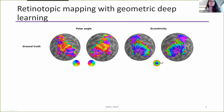Here we have the polar angle maps and the eccentricity maps for one participant in the dataset. For illustration purposes, we represented these maps on spherical surfaces because it would be easier to see the entire visual cortex. It's important to note that we trained our model using a folded cortical surface that best resembled the geometry of the brain cortex. The solid white lines represent iso-polar angle lines, while the dashed white lines represent iso-eccentricity lines, and those lines were drawn based on these empirical maps.